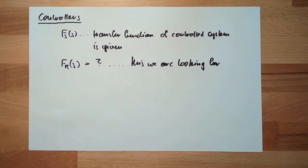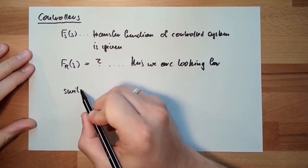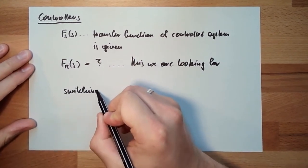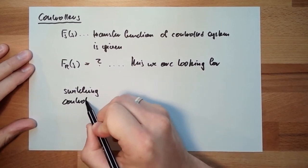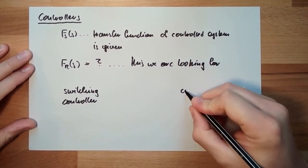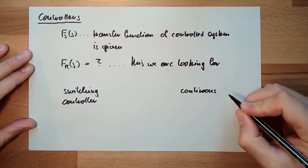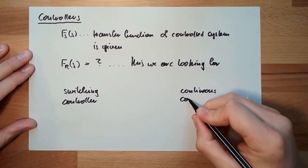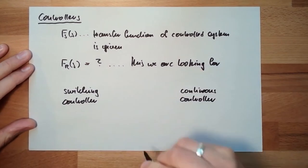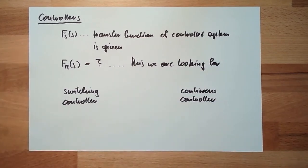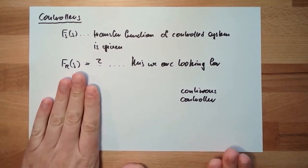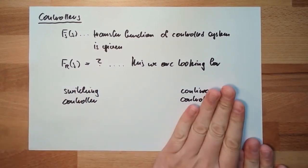Basically we said our controller does have two possibilities. One possibility is a switching controller and other possibility is a continuous controller. These are two parts. There will be one video for switching controllers and several videos about continuous controllers.